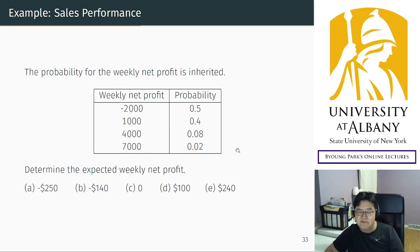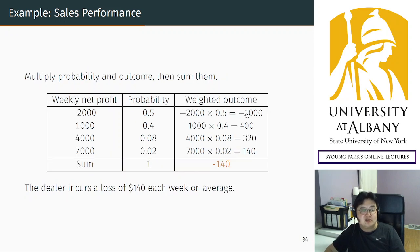Then sum all of them. The sum will be the expected value of the variable. Let's do this: multiply line by line. The negative number doesn't change anything, so multiply as usual. The summation is minus one thousand plus four hundred plus three hundred twenty plus one hundred forty. In the end, the summation will be minus one hundred and forty.